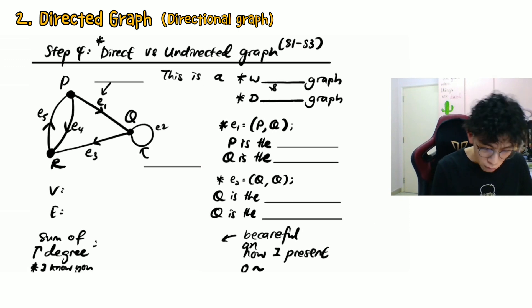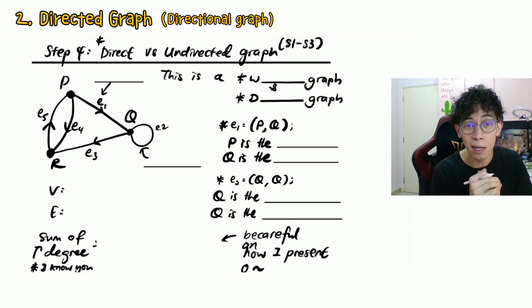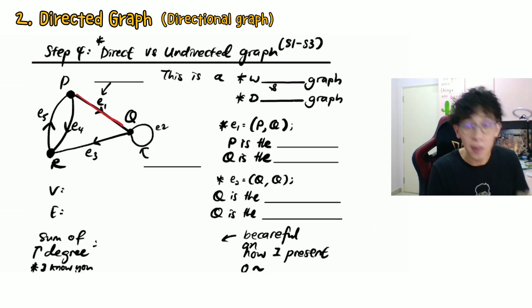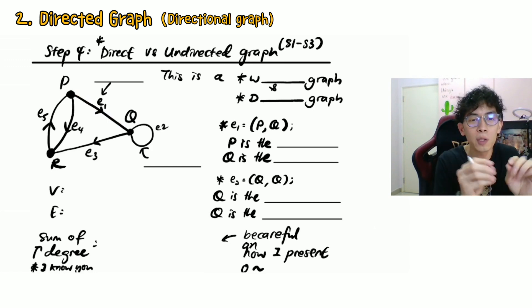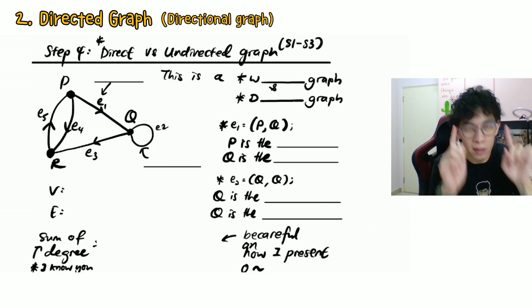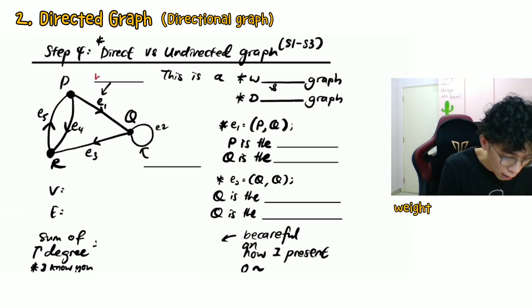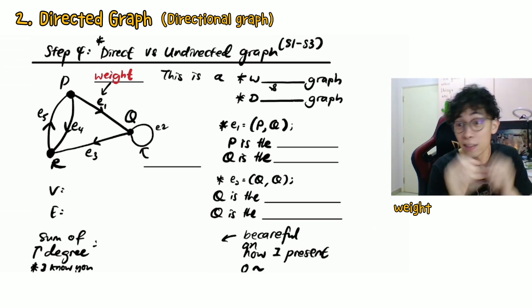You can see vertices P, Q, R here. The specific line from P to Q is the edge. I'm referring to E1 on top of that edge. This is a weight — where you place a certain value on top of the edge.